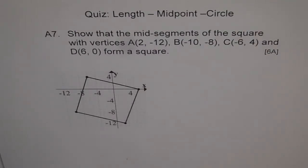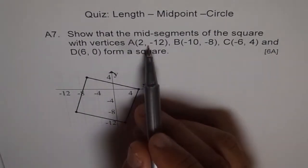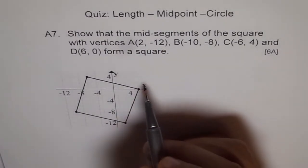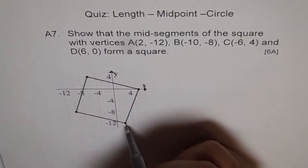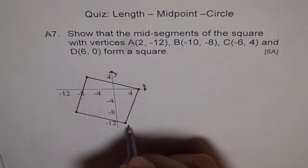The square is drawn for us. Let's figure out where A, B, C and D are. A is (2, -12), so A has x value 2 and y value -12. That is A for us, we will write A here.